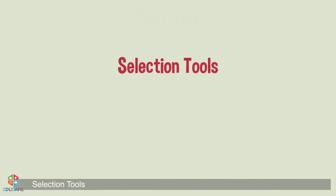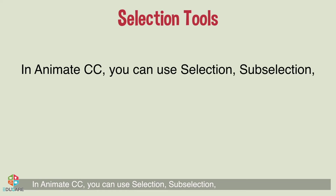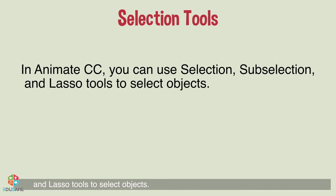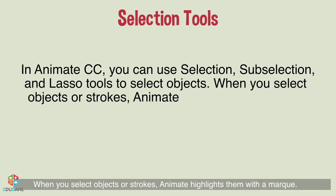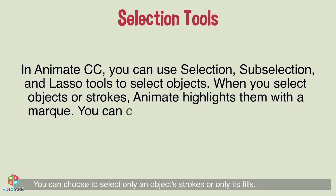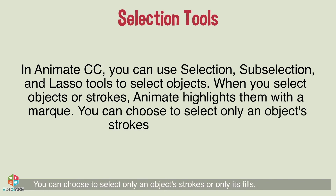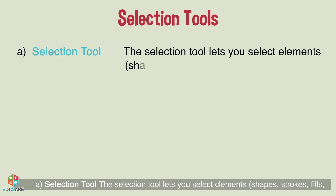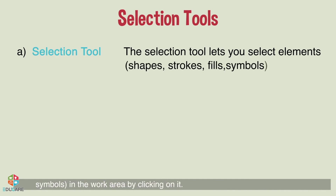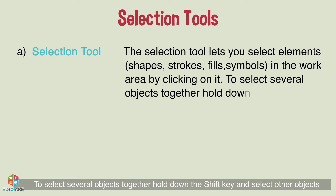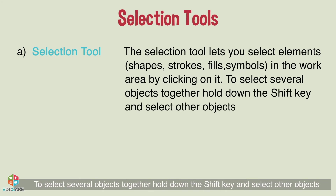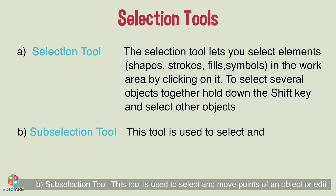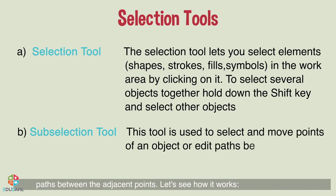Selection tools: in Animate CC, you can use the Selection, Sub-Selection, and Lasso tools to select objects. When you select objects or strokes, Animate highlights them with a marquee. You can choose to select only an object's strokes or only its fills. Selection tool: the selection tool lets you select elements like shapes, strokes, fills, and symbols in the work area by clicking on them. To select several objects together, hold down the Shift key and select other objects. Sub-Selection tool: this tool is used to select and move points of an object or edit paths between adjacent points.